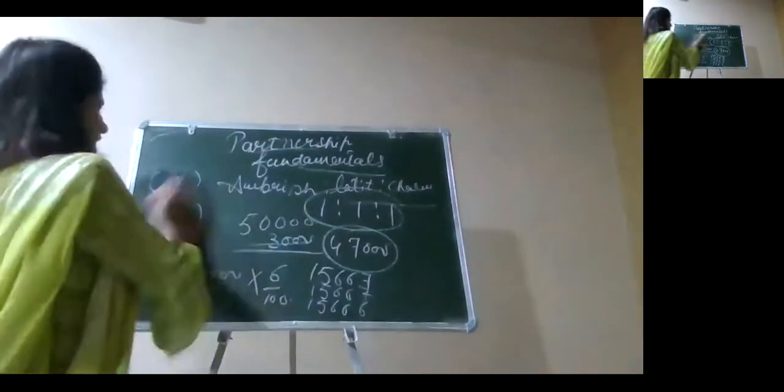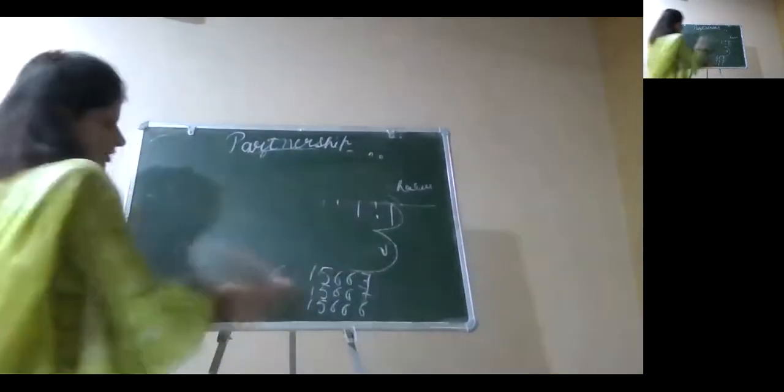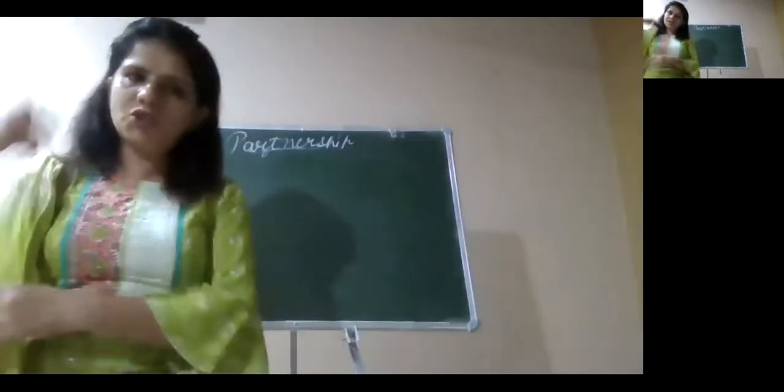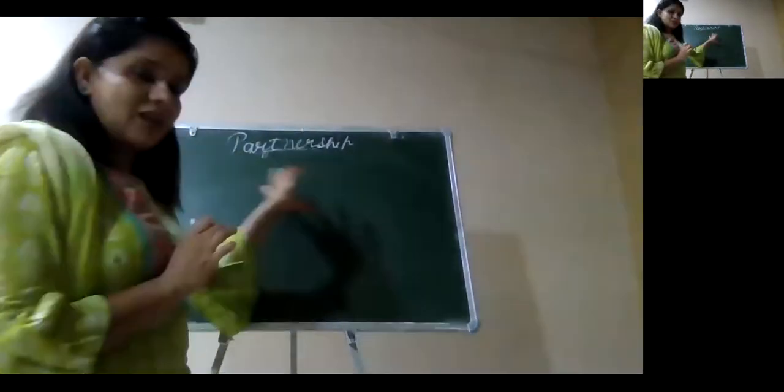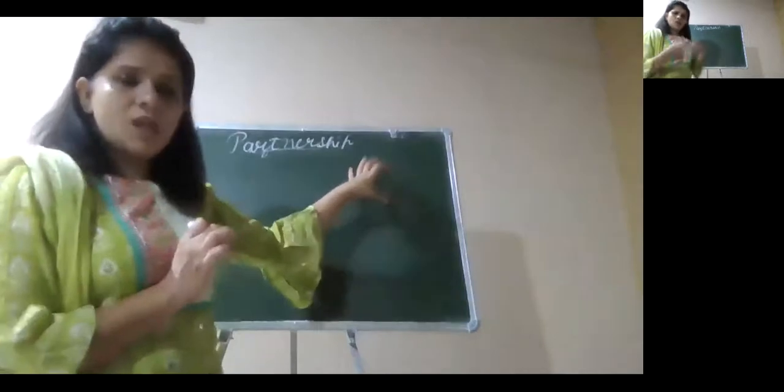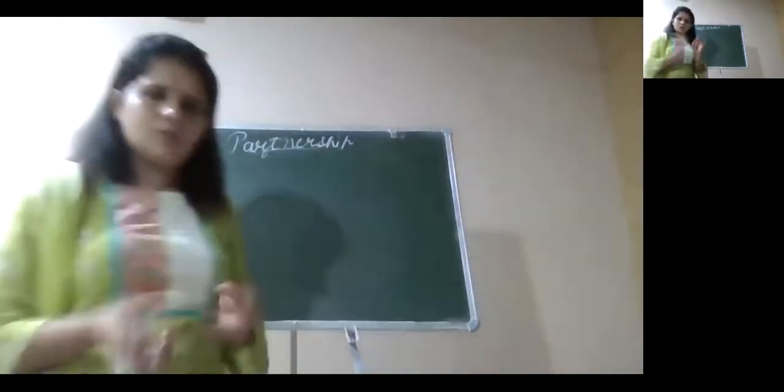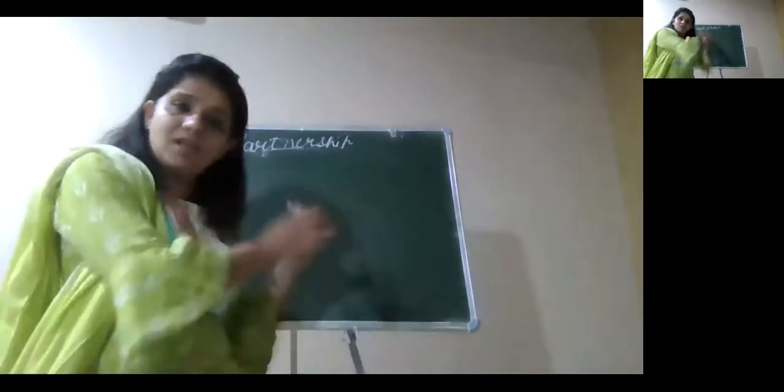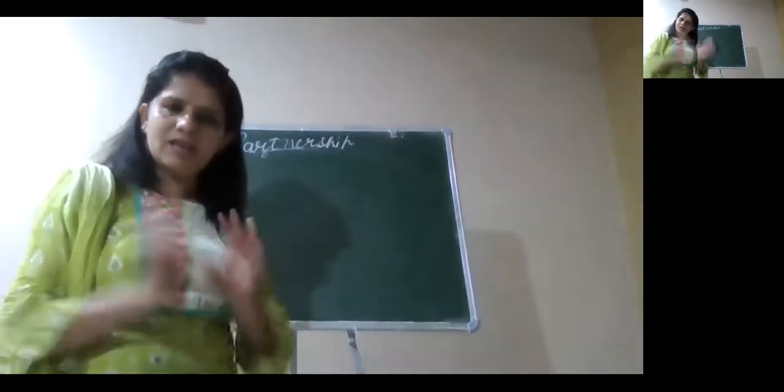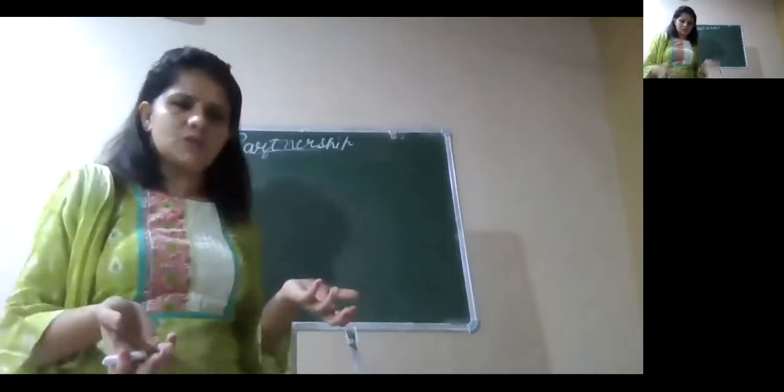Now come to illustration number two. Whenever the partnership question comes, I firstly write the name of the partners at the top of my sheet. I write it on the top of my board and you will be writing it on the top of your sheet. It is my recommendation every time that whatever is being written and whatever are the highlighting points, just mention it on your sheet. And don't read the statement again and again, that will waste your time.